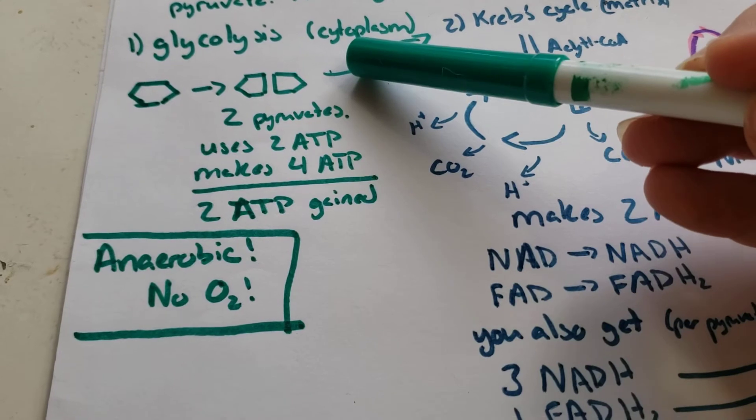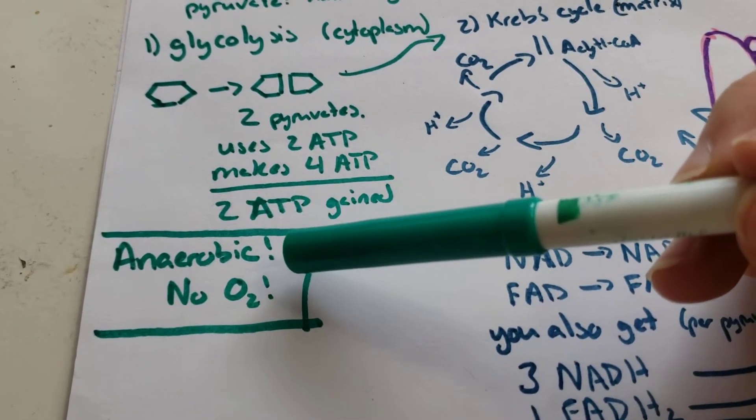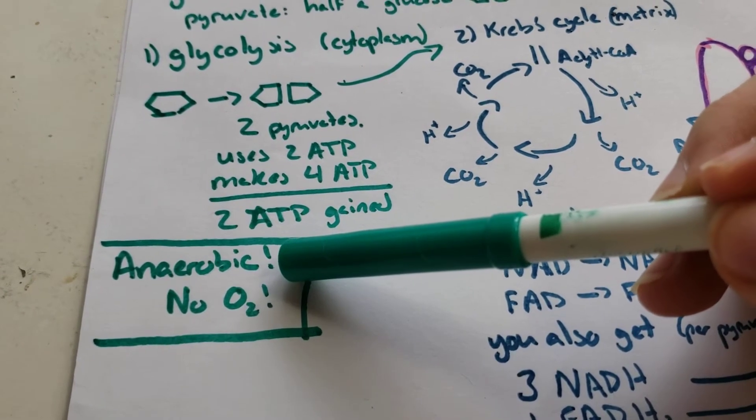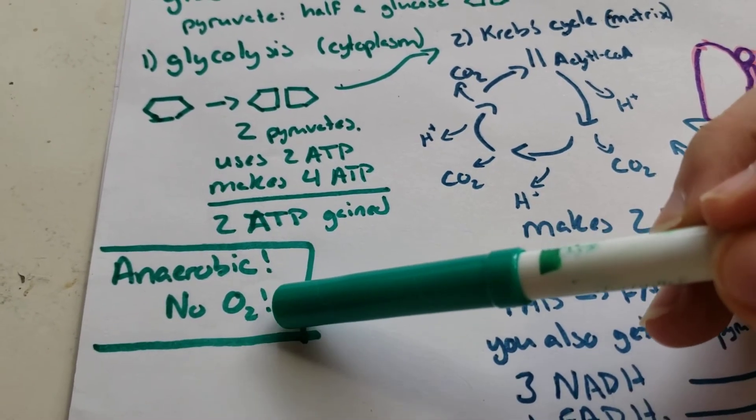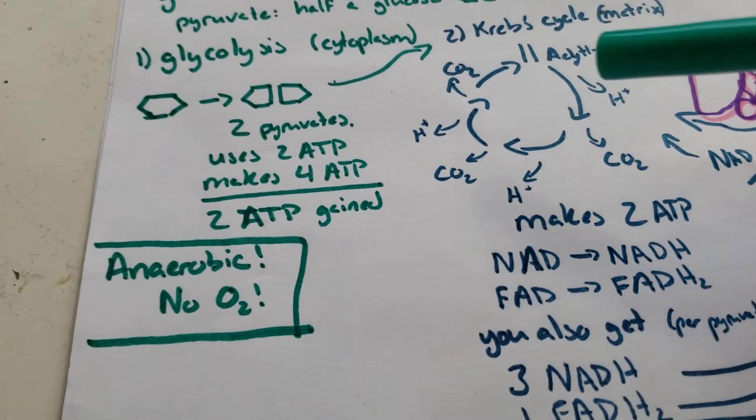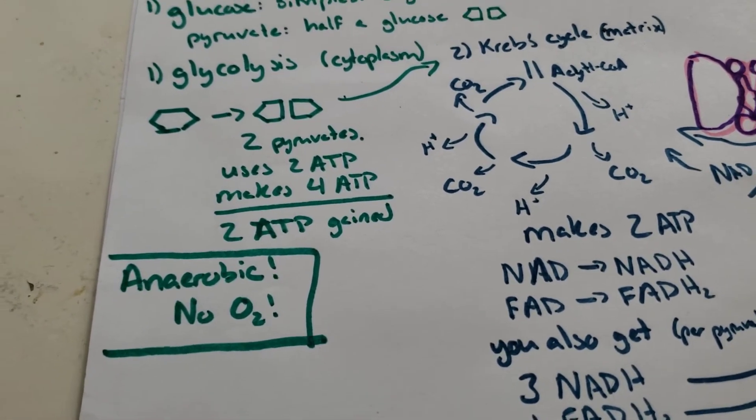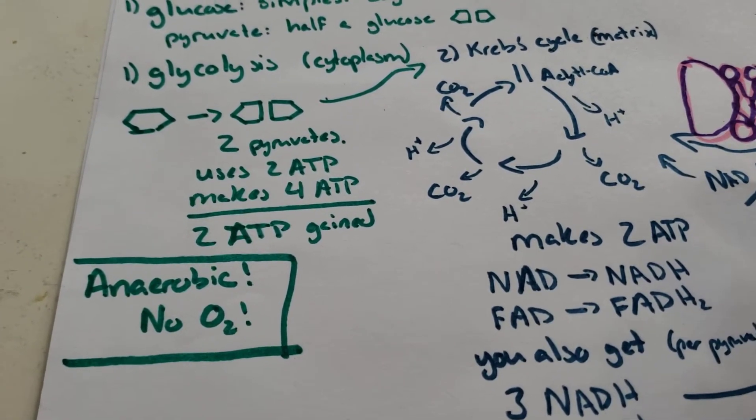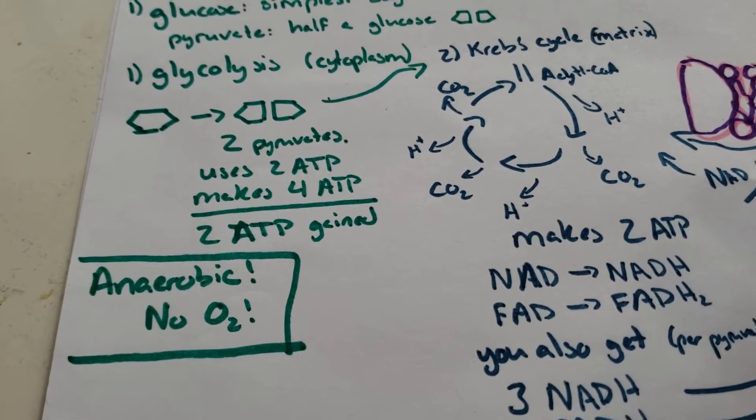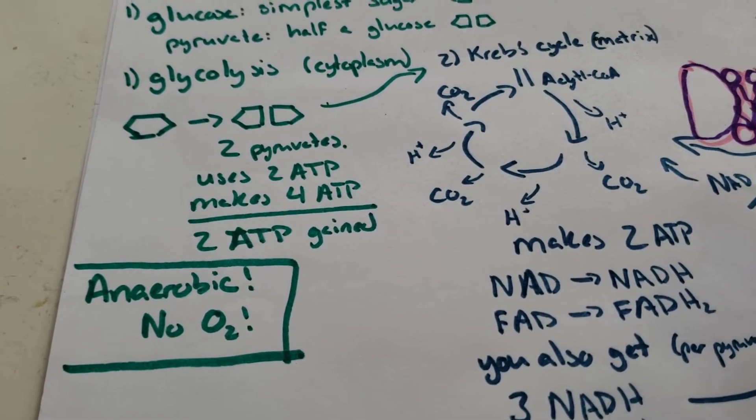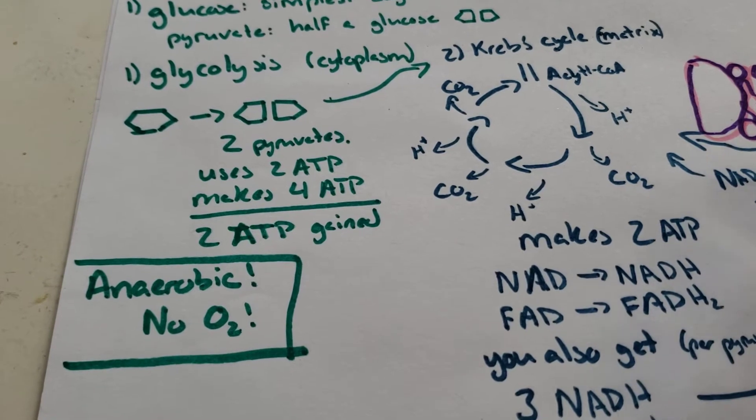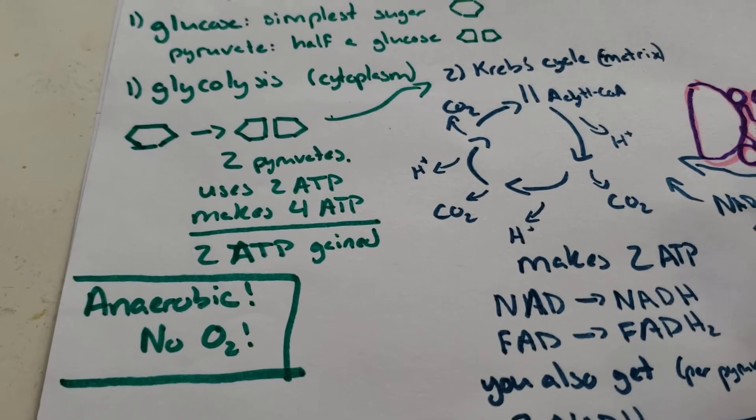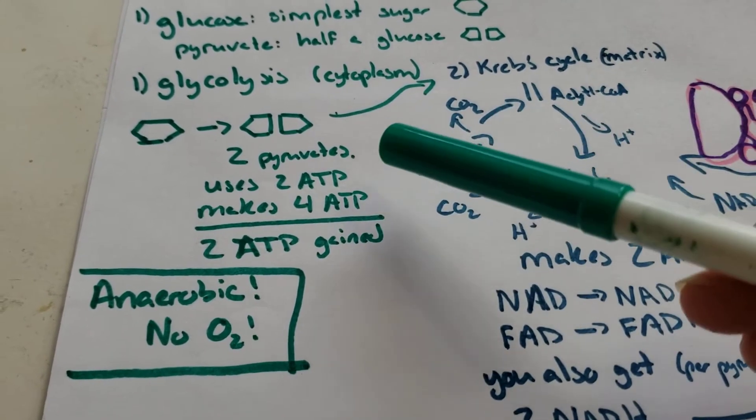You need to know that glycolysis, this first step, happens in the cytoplasm of your cells, so in the jelly that's in the middle of your cells. And that it is anaerobic, which means it does not use oxygen. No oxygen needed. This is super important. Glycolysis is super simple. Every single living organism from single-celled yeast organisms to our bodies can do glycolysis. You don't need oxygen for it. It gives you itty bitty little bitty amounts of energy, but everything can do it.